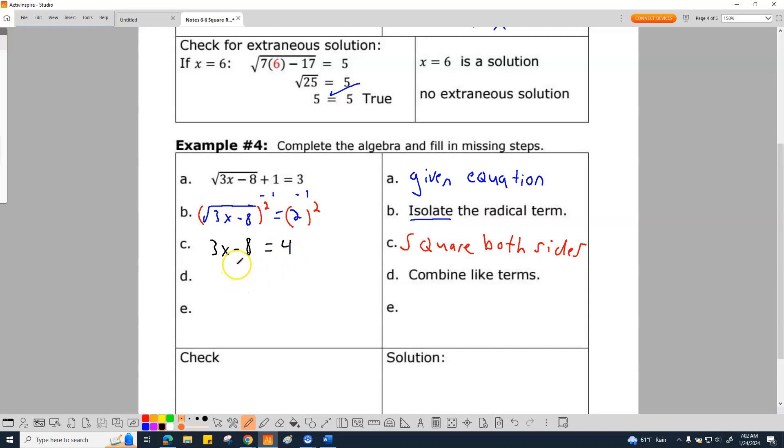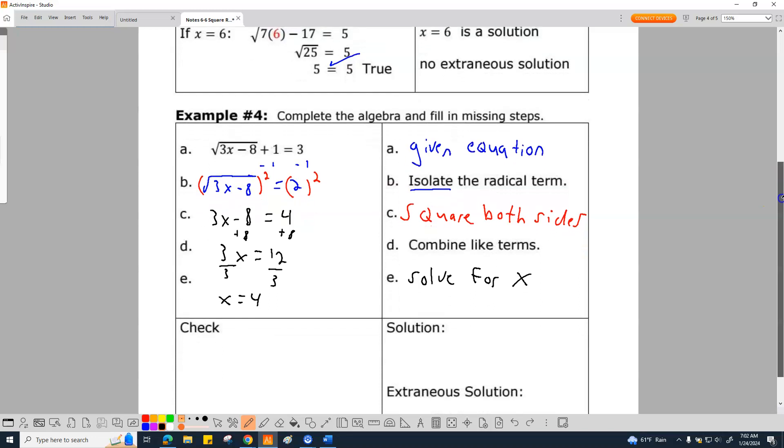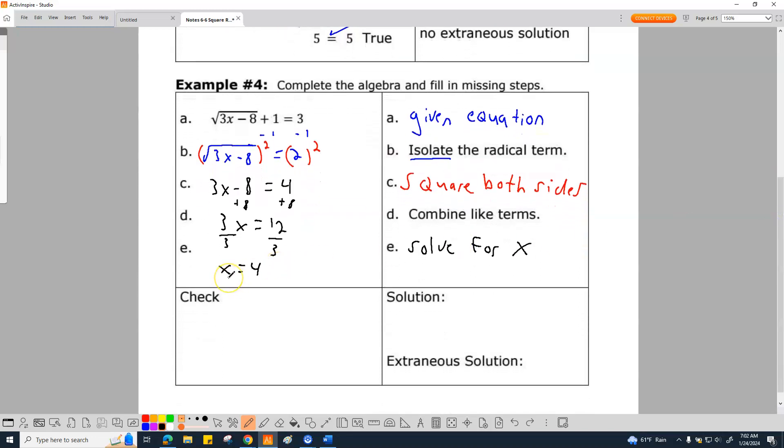All right. Combine like terms. This should be pretty simple at this point in our lives. Put the eight on both sides. And we end up with three X equals 12. Solve for X, which means divide by three. And you get X equals four. You can see I'm kind of going through this because we already did this part. So, we ended up solving for X. And this is what we got. We got X equals four.